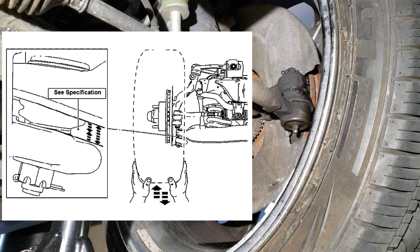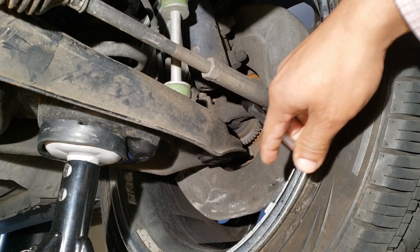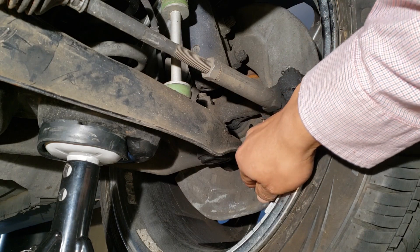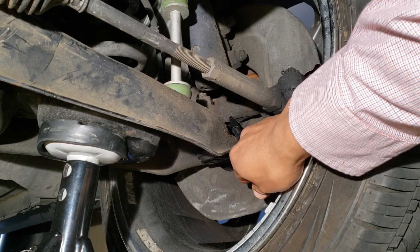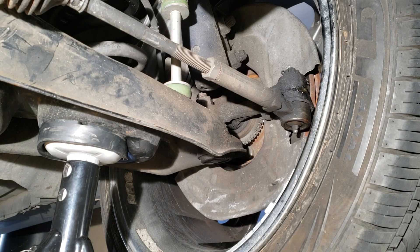You can also check for ball joint vertical movement. The procedure on this vehicle is to place the dial indicator under the knuckle next to the lower ball joint, then move the tire up and down by hand. Some procedures require the use of a pry bar. And that's it for front suspension components and which alignment angles they affect.